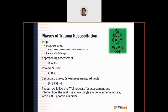The phases of trauma resuscitation include: preparation before the patient arrives — knowing equipment, knowing the environment, and practicing skills; immediate prep when we hear the patient is en route; and triage when the patient presents. Then comes the approaching assessment — checking for exsanguination — followed by the ABC process, the primary survey, the secondary survey, reassessments, and adjuncts. Even though we follow the ATLS process, many things are done simultaneously, so we must keep priorities in order: airway, breathing, circulation.